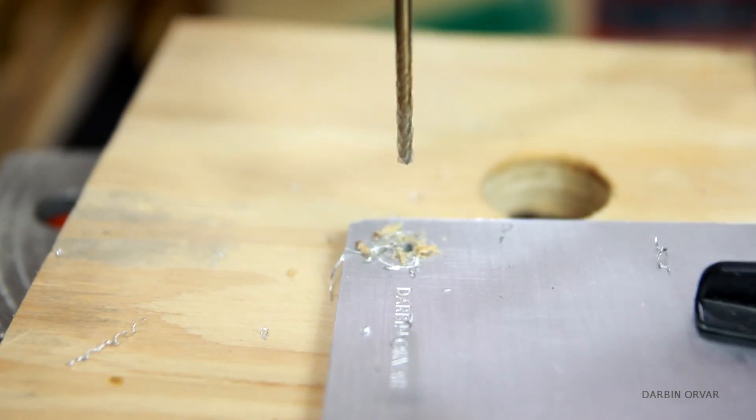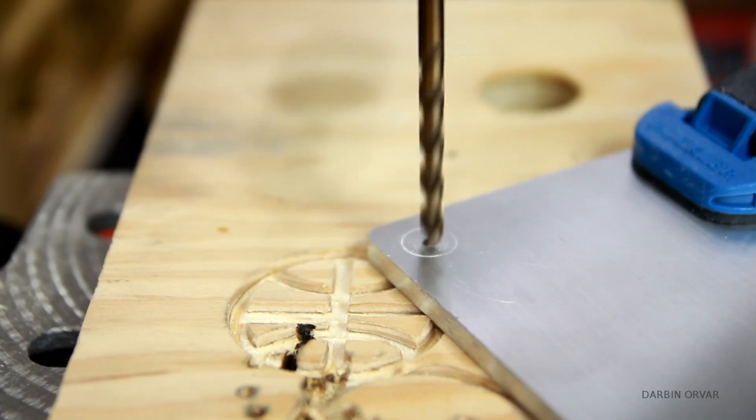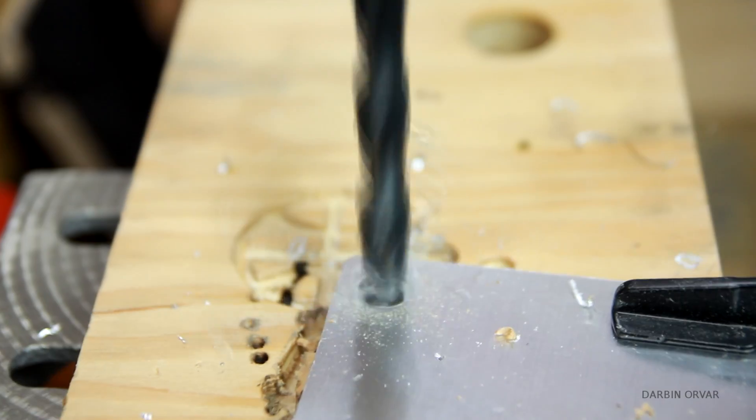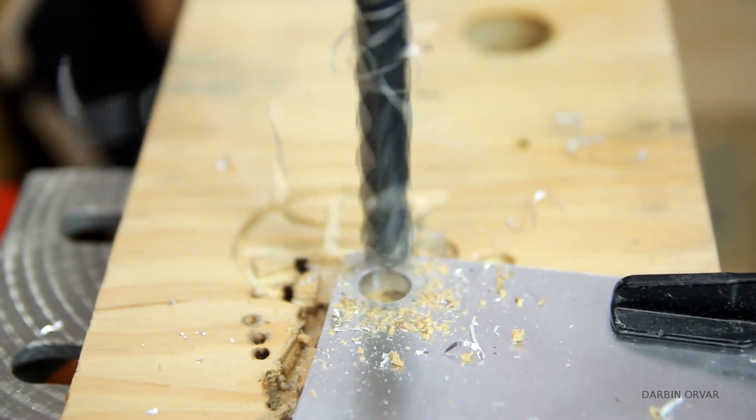Next I proceeded to drill out the holes in the corners. So I started with a small drill bit then got a slightly bigger one and an even bigger one and so on until I reached the half inch that I needed.